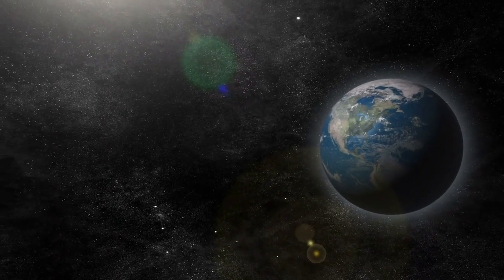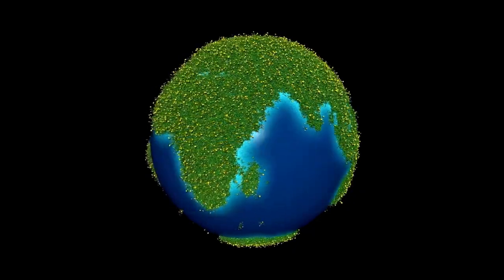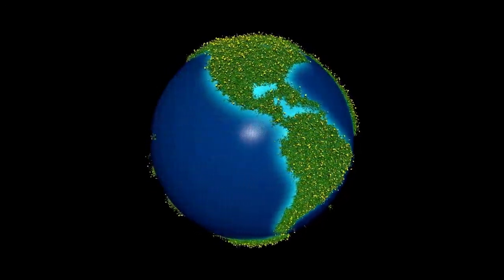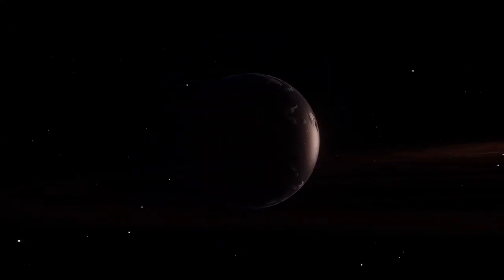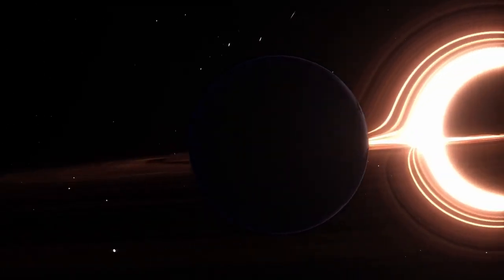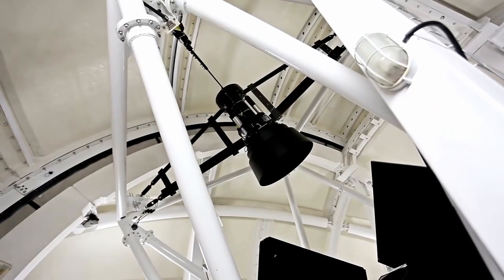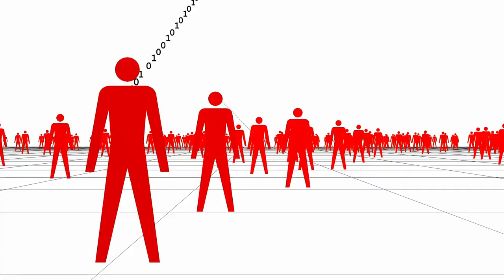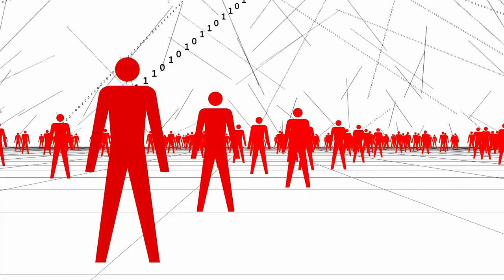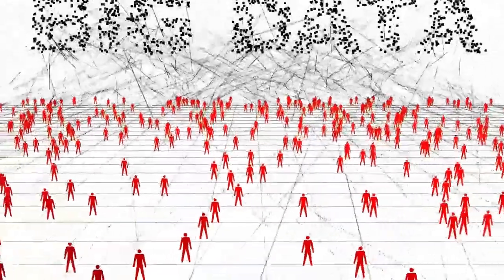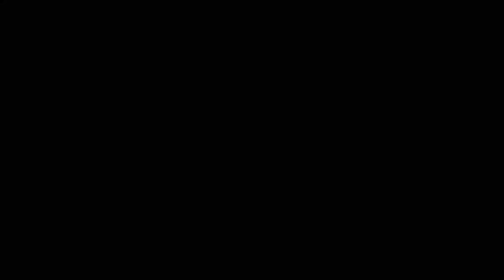For years, this small rocky world existed in the minds of scientists as a distant possibility, detected only through faint signals, tiny wobbles in starlight, and subtle dimming events. Now, for the first time in human history, we have a direct, incredibly detailed image of this alien planet. Captured through layers of thermal and infrared imaging, the image offers more than just a glimpse—it marks the beginning of a new era in exoplanetary exploration.